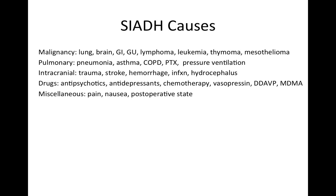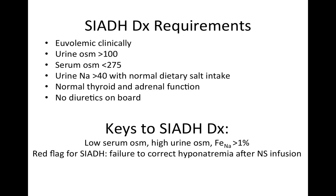There are many causes of SIADH, but having a risk factor doesn't mean a patient automatically has it. To diagnose SIADH, specific criteria must be met: euvolemia, high urine osmolality with low serum osmolality reflecting inappropriately elevated ADH, high urine sodium, normal thyroid and adrenal function, and no diuretic use. A clinical red flag is when you give normal saline to correct hyponatremia and it fails to correct — that's when SIADH should be strongly suspected.